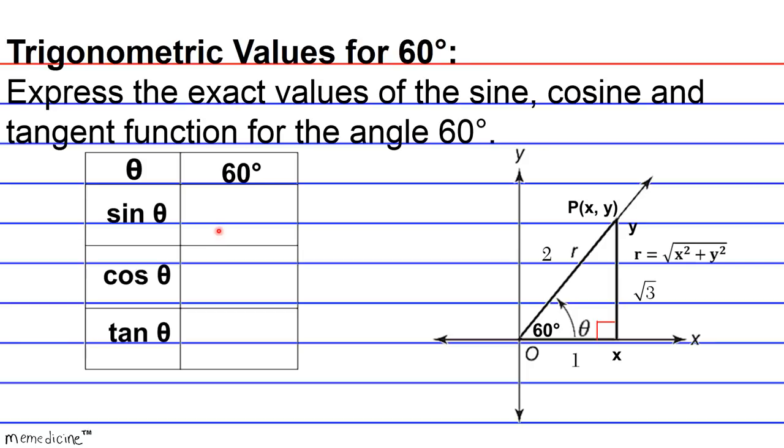Sine is traditionally the opposite side, which in this case corresponds to our Y coordinate, which is going to be radical 3 over the value of our hypotenuse segment length. So the sine of 60 degrees is radical 3 over 2, or the square root of 3 over 2.